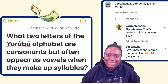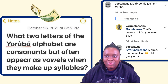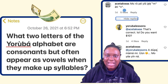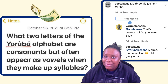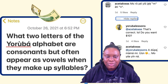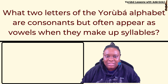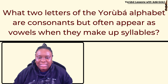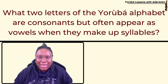Thank you so much for your support. So the answer is MI and NI — those are the two consonants that can also be vowels when they have to be, when they make up a syllable, when they are the only letters in a syllable. That's the answer, but I'd like to explain better.